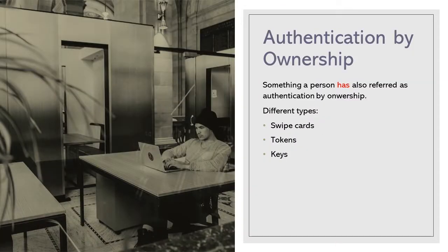Something a person has is commonly referred to as authentication by ownership. Different types include swipe cards, unique tokens, and keys. The commonest example of something a person has is a key. We all use keys in our lives to get into our homes, to open car doors, to start our car engines. This piece of metal proves we have something at hand that we can use to verify we are allowed to access or use something.